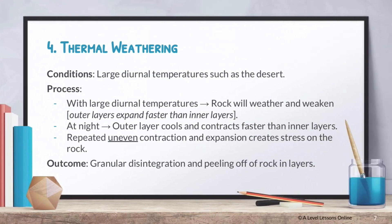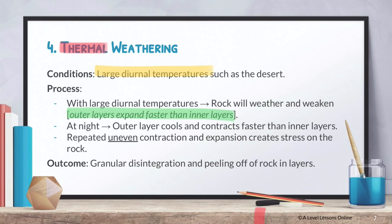Thermal weathering — as the name suggests, thermal is actually heat, so this is basically heat weathering. Similarly, the conditions required are large diurnal temperatures — places such as deserts whereby there's an extremely high temperature in the morning and extremely low temperatures at night. What happens is that the rock will actually start to weaken because the outer layers actually expand faster than the inner layers due to the heat outside. So when there's this case of uneven contraction and expansion, it creates a lot of stress on the rock, the rock starts to peel off as well, and this results in granular disintegration. You should be using technical terms like granular disintegration and block disintegration when explaining your weathering processes.